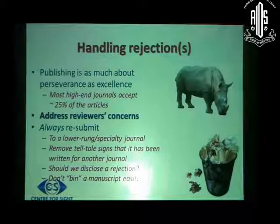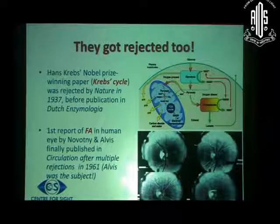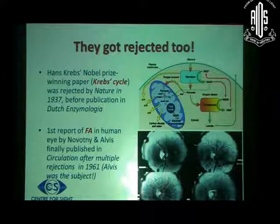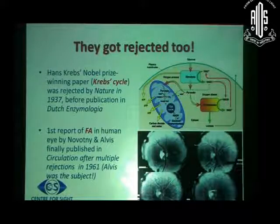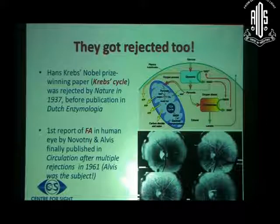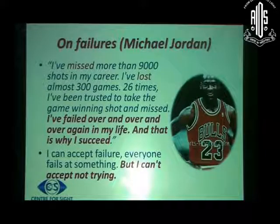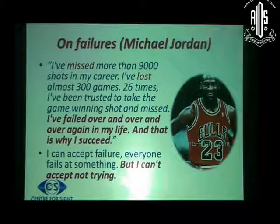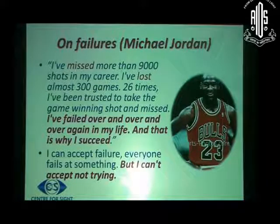Whatever you do, you should not put a manuscript in the dustbin easily. Remember that Hans Krebs' Nobel Prize-winning paper on the Krebs cycle was rejected by Nature before it got published in a small journal called Enzymologia. Krebs got a letter of apology from Nature after he received the Nobel Prize. Similarly, the first report of a fluorescein injury between human eyes was rejected by the American Journal of Ophthalmology, and after several rejections got published in Circulation. When we look at successful authors or stars in any field, we look at their skill and ability to score, but we don't look at the fact that their success came after several layers of failure. As Michael Jordan said, he can accept failure, but he cannot accept not trying.